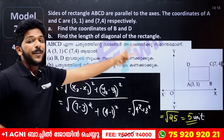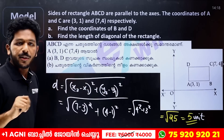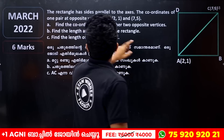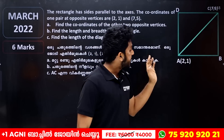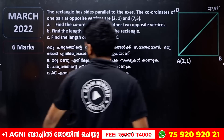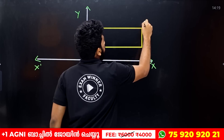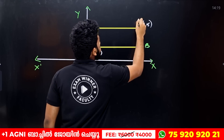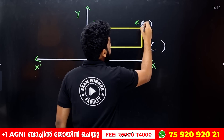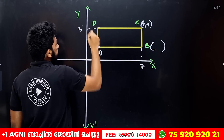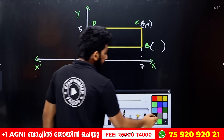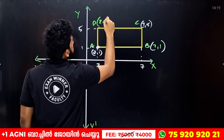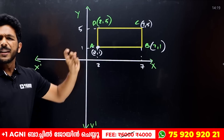Now let's answer a final exam question. A rectangle has sides parallel to the x and y axes. Two coordinates are given: A(2, 1) and C(7, 5), labeled A, B, C, D. Using the first method: x is 7, y is 5, x is 2, y is 1. So B is (7, 1) and D is (2, 5).